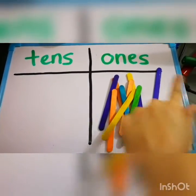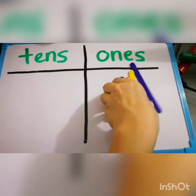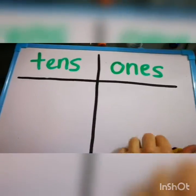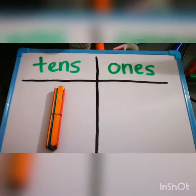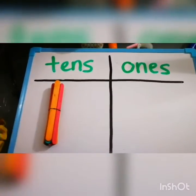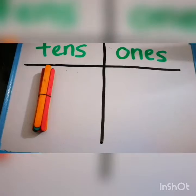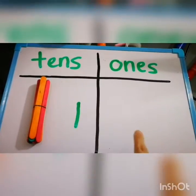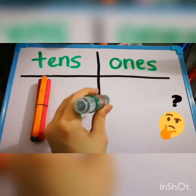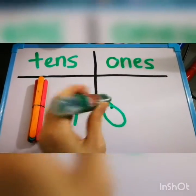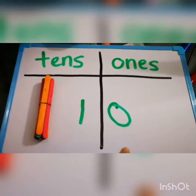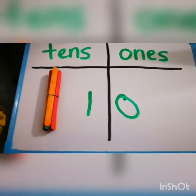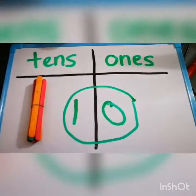Now this will transform once all the popsicle sticks add up and become 10, because then I'm going to bundle them up together and they're going to come right here. So there is 1 bundle of 10 popsicle sticks together. And are there any popsicle sticks over here? Nope, so that makes 0. So 1 ten and 0 ones makes 10.